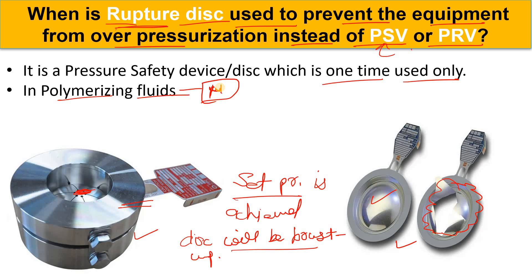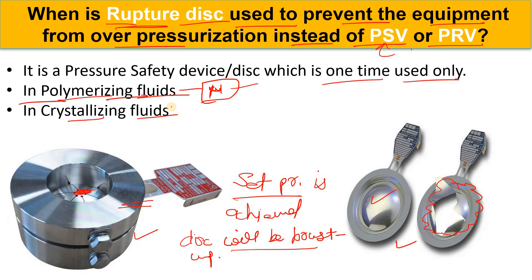The fluid can become highly viscous and can cause blockage or damage to PRVs and PSVs — I have seen this in industry when handling viscous fluids. It also depends on process conditions like set pressure and temperature. When we handle viscous fluids, corrosive fluids, or crystallizing fluids, we prefer to use the rupture disk, because in crystallizing fluids when temperature goes down the fluid could solidify and damage or block your PSVs and PRVs.